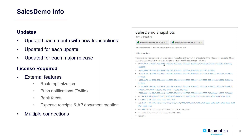There are certain situations where you need to acquire a license. When we have external features such as route optimization, push notifications, bank feeds, expense receipts, and AP document creation, you need to use your not-for-resale license to request that these features be added. Simply create a pre-sales request support case to do that. You may also need a license if you have more than two connections to your sales demonstration database.